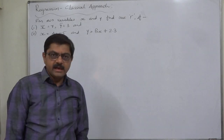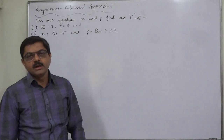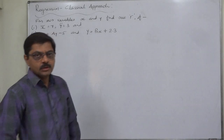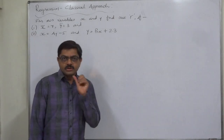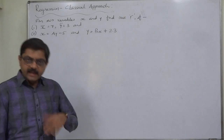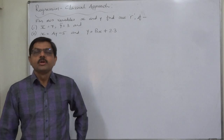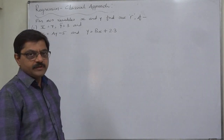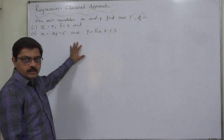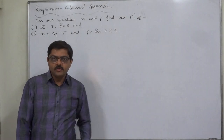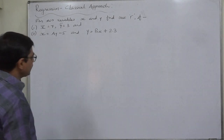We know very well that from the two lines of regression directly we cannot find out the coefficient of correlation. There is a hidden step of finding the values of the two coefficients of regression, and then only we can find out the value of the coefficient of correlation as a geometric mean of the two coefficients of regression. We also know that from the equations of the line of regression we can easily find out the coefficients of regression. Let's do it first.